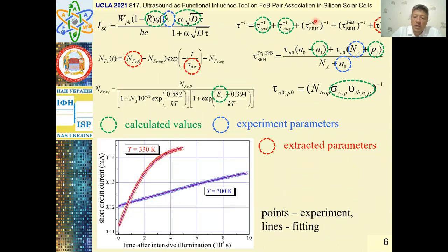The intrinsic recombination and Shockley-Read-Hall recombination were taken into account, and the time of Iron-Boron Pair Association were determined for short-circuit current kinetics.